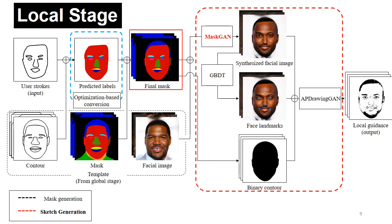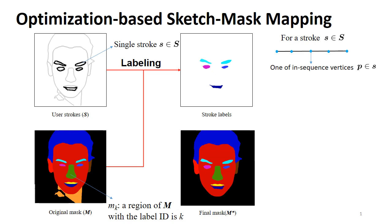However, the user's strokes from the global stage do not contain such label information, and it is a tedious and time-consuming task to manually label strokes in a freehand portrait drawing system. Thus, to alleviate the need for manual labels and adapt Dual Face to freehand sketching, we propose to automatically use an optimization-based algorithm to generate a facial mask according to the contour sketch from the user's drawing. This procedure is called sketch-mask mapping.